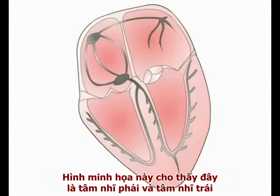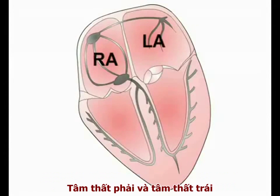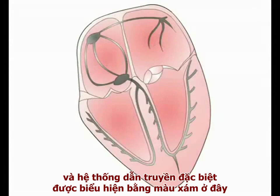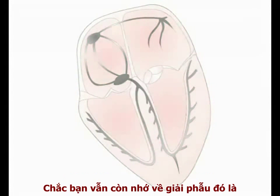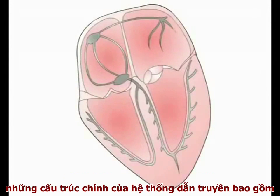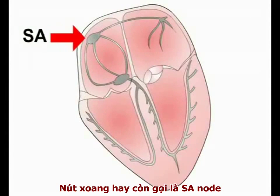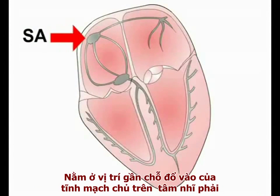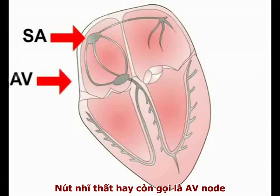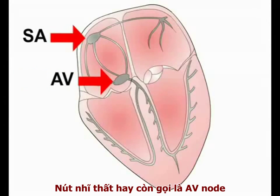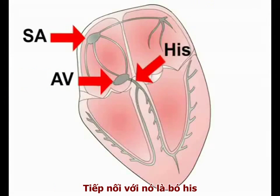The schematic shows the right and left atria, the right and left ventricles, and the specialized cardiac conducting system seen here in grey. You will remember from anatomy that the main components of the conducting system are the sinoatrial, or SA, node, situated near the entry of the superior vena cava into the right atrium, and the atrioventricular, or AV, node, leading into the bundle of Hiss.